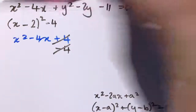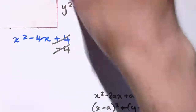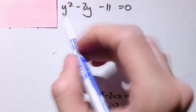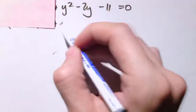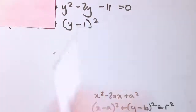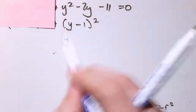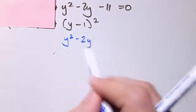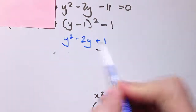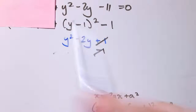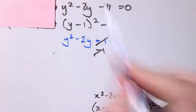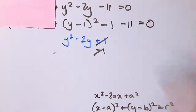Now we do the same with y. I've got y squared minus 2y. This gives y minus 1 squared. If I multiply that out, I get y squared minus 2y plus 1. So I need to subtract that 1 so that the expression remains the same as y squared minus 2y. And then I've still got the minus 11, and it's all equal to 0.